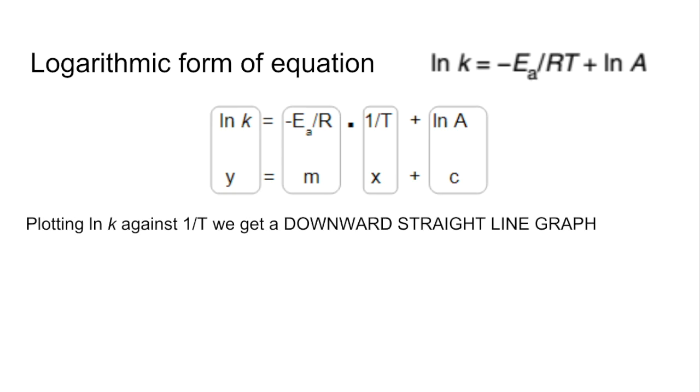So you can see, hopefully, that if we plot ln K, natural log of K, as the Y-axis, against 1 over T as the X-axis, we're going to get a straight line graph, but it's going to have a negative gradient, so it's going to be a downward straight line.